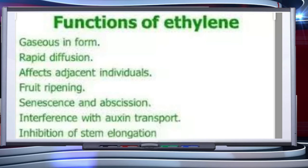Ethylene is the only gaseous phytohormone. It stimulates the growth of fruits. In some plants, it inhibits the elongation of stem and roots in the longitudinal direction. It accelerates the abscission of leaves, flowers, and fruits, and it promotes the ripening of fleshy fruits like apple, banana, and citrus.